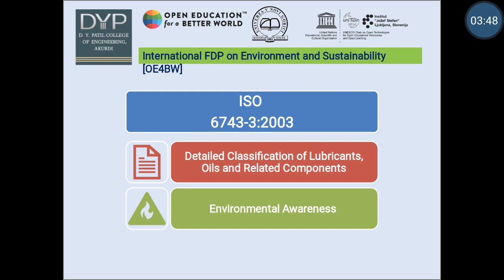The next ISO standard is ISO 6743-3-2003. This standard establishes the detailed classification of lubricants for use in family D: air compressor, gas compressor, and refrigeration compressors. The primary intention of this classification is to describe and promote the use of the type of lubricant best suited for a particular application, specifically with stationary air compressors, with the aim of reducing as far as possible the risk of fire and explosion.